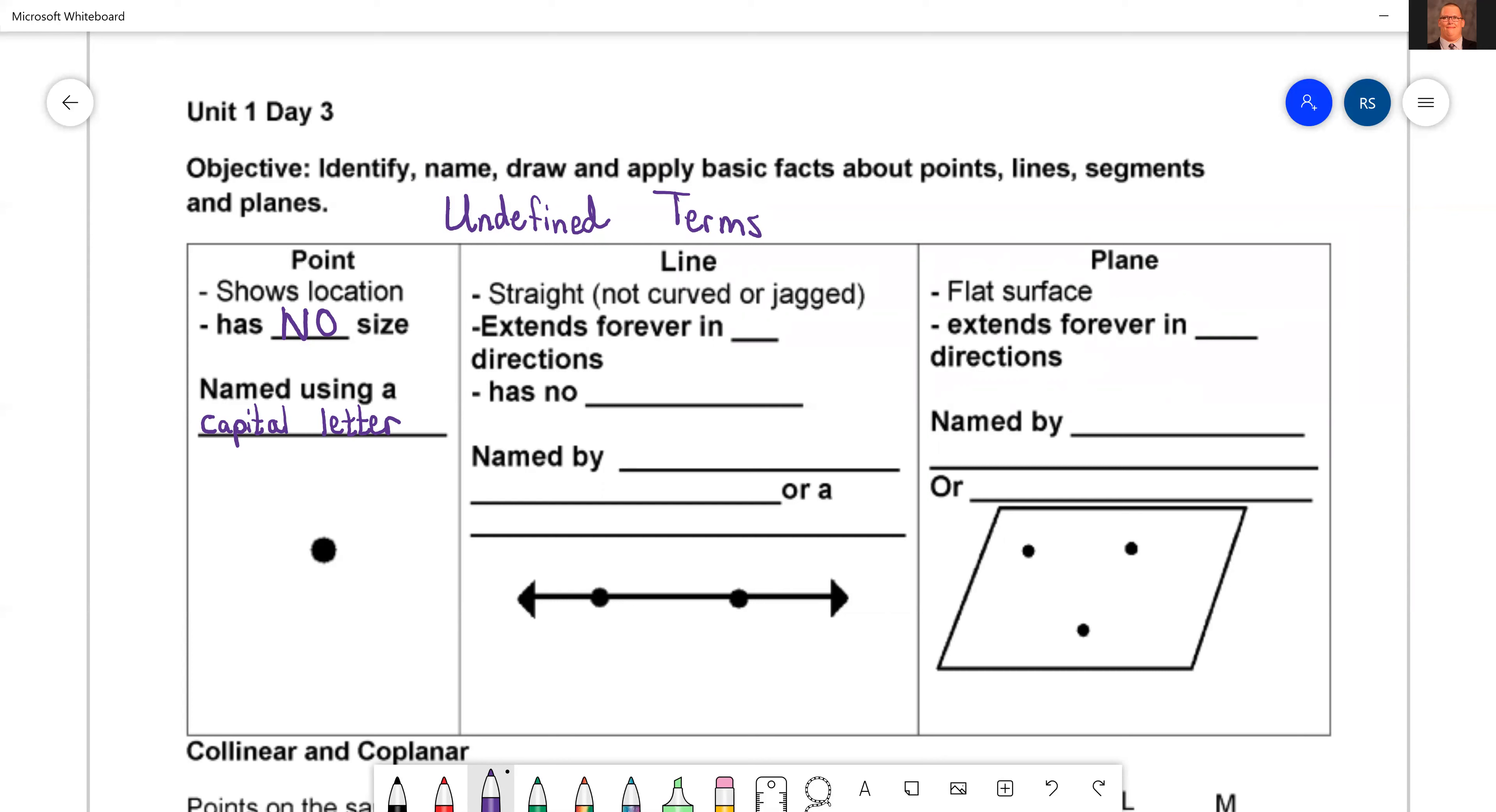And as far as geometry goes, we name the point using a capital letter. So for example, we have this point here, I'm going to call it A. So I put an A beside the point. If I'm writing it out, I can just say A or I can say point A. That's how you name points.